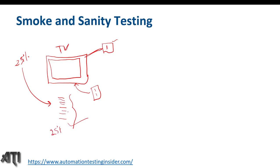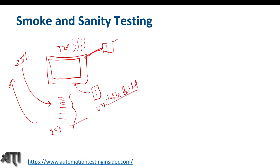If those critical test cases pass, we can go ahead and test the 25 percent of features for which we have test cases. But if while plugging in the power cable and switching on the TV some smoke comes out, we stop immediately and revert the build to the development team, because it's not stable enough for further testing. This is smoke testing — performed on an unstable build to verify critical functionalities.